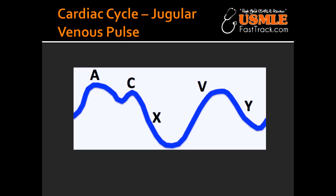What is the X-descent? X-descent is the atrial relaxation and a downward displacement of the closed tricuspid valve during ventricular contraction.